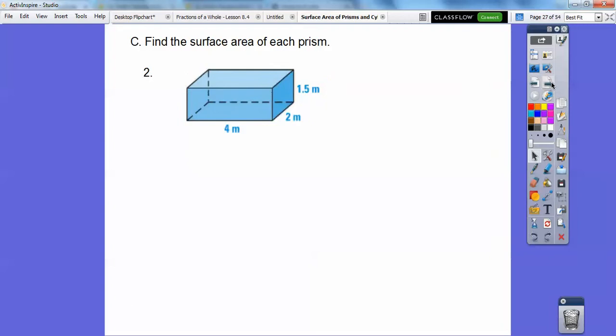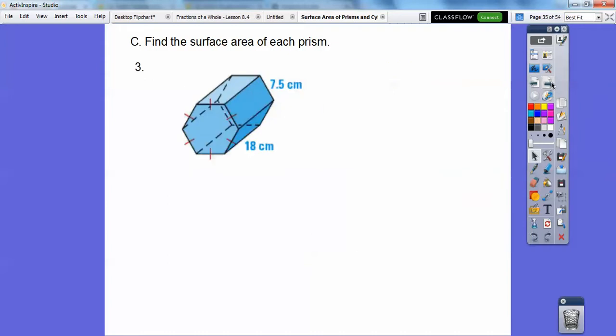All right, this one's probably the easiest one of the bunch. The base is 4 times 2. Two of the bases is 16. So the perimeter is 12 times the height and then add them together and we get 34 meters squared. Nice and easy.